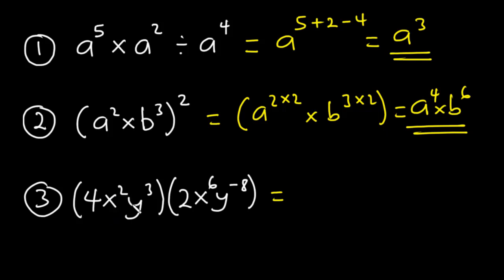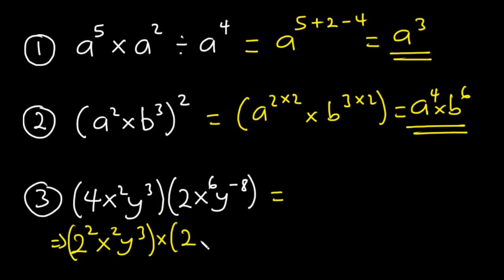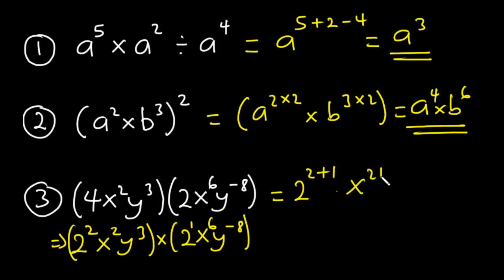For the third example, we have 4x squared times y cubed, times 2x exponent 6 times y exponent negative 8. Note that 4 equals 2 exponent 2. So we have 2 exponent 2 times x exponent 2 times y exponent 3, times 2 exponent 1 times x exponent 6 times y exponent negative 8. Combining: 2 exponent 2 plus 1, x exponent 2 plus 6, and y exponent 3 minus 8.